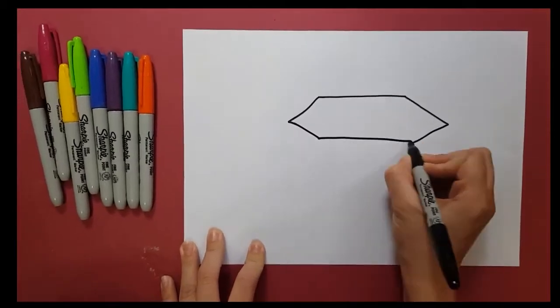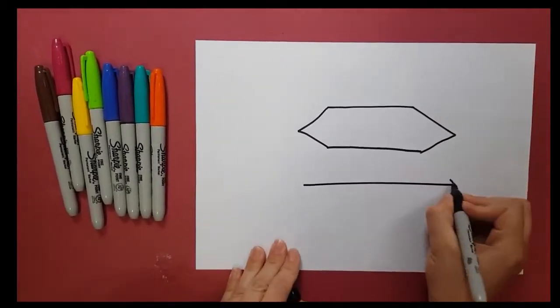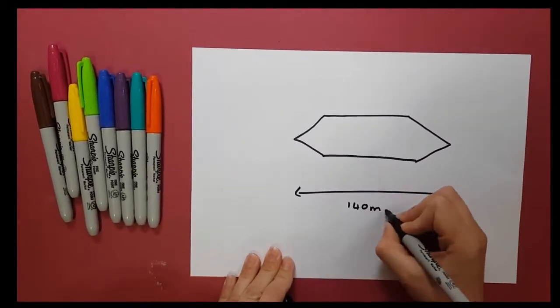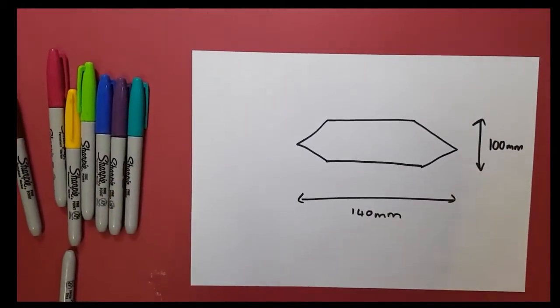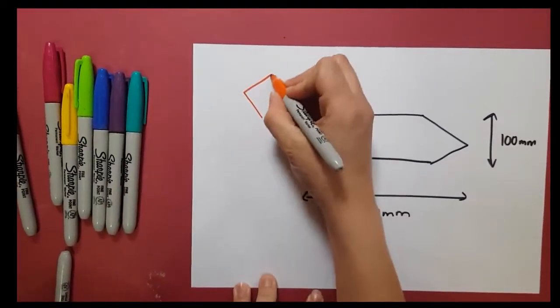Now we are going to draw the dimensions of the antenna onto the tin. Our antenna will be 140mm long, 100mm high, and we will have an angle alpha of 90 degrees.